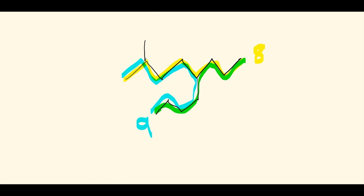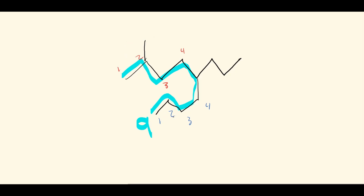The blue chain is the parent chain. Now we need to number it, and we can do this in two ways: starting from the top or from the bottom. We compare where the first branch is. Starting from the top, the first branch is at carbon two; starting from the bottom, it's at carbon five. Since the red numbering gives a branch at carbon two, that is the correct way to number this chain.